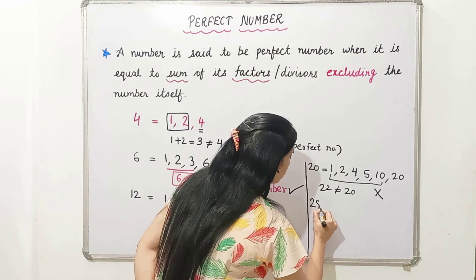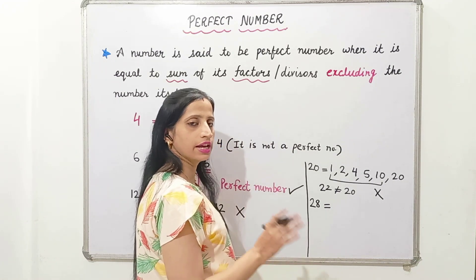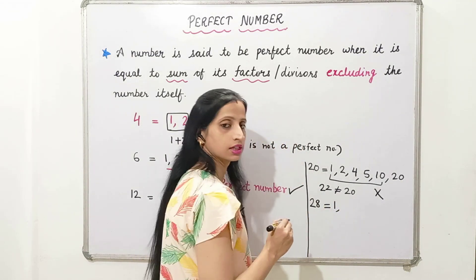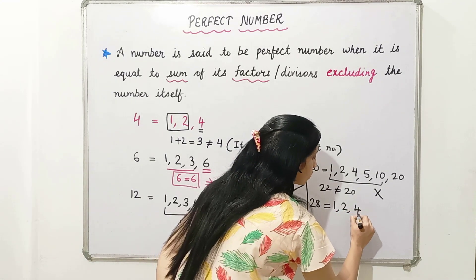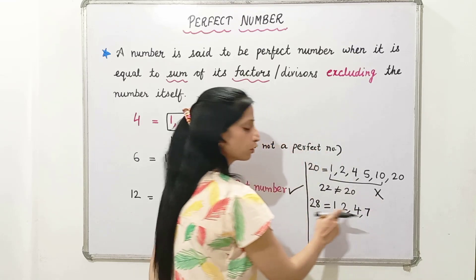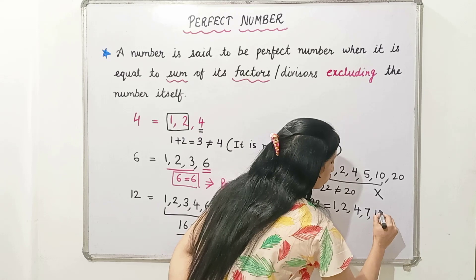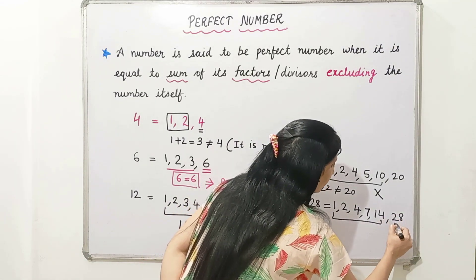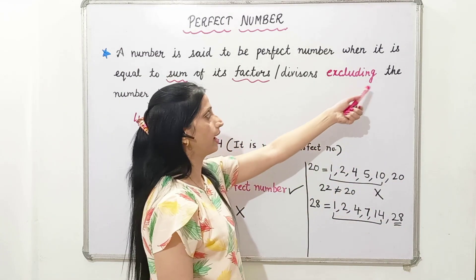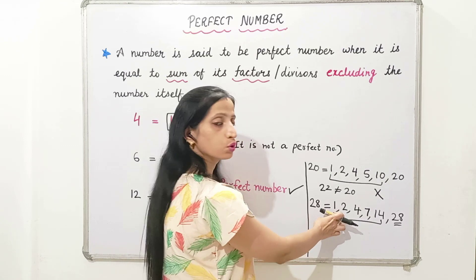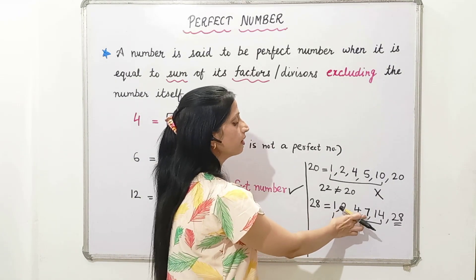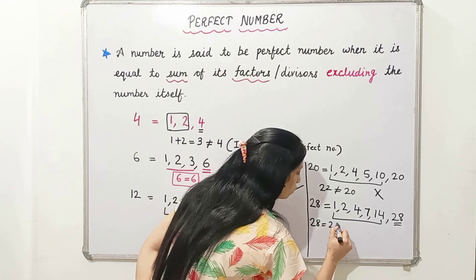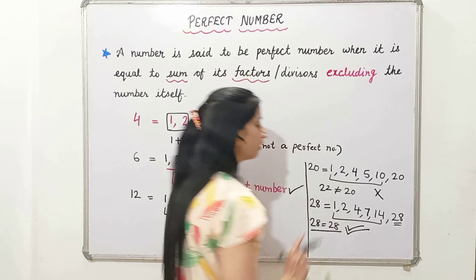The last example I'm taking is 28. You can take any number and check like this whether it is a perfect number or not. The factors of 28 are 1, 2, 4, 7, 14, and 28. Now let's add these excluding 28: 1 plus 2 is 3, plus 4 is 7, plus 7 is 14, plus 14 is 28. So it comes equal to 28. Hence 28 is a perfect number.